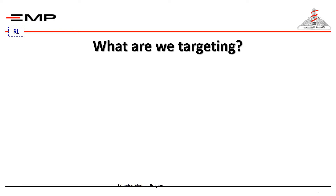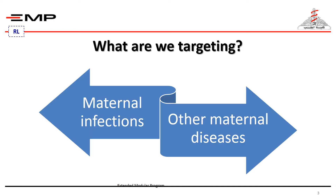Maternal diseases during pregnancy can affect the fetus directly or indirectly. We are targeting both maternal infections and other maternal diseases. Other maternal diseases include autoantibody-mediated diseases having direct consequences on the fetus and neonate, because antibodies — usually of the IgG type — can cross the placenta to the fetal circulation, in addition to maternal diabetes which has another pathogenesis.